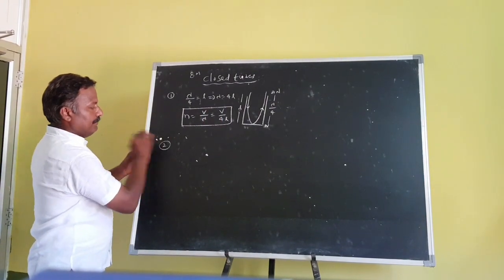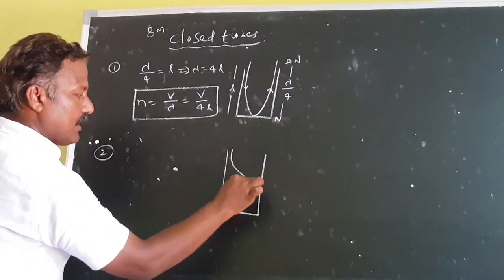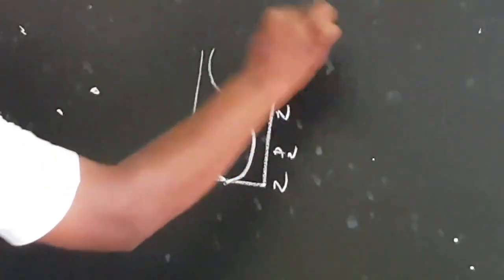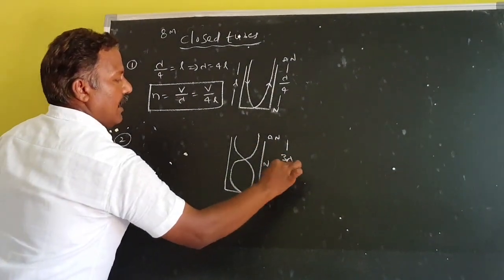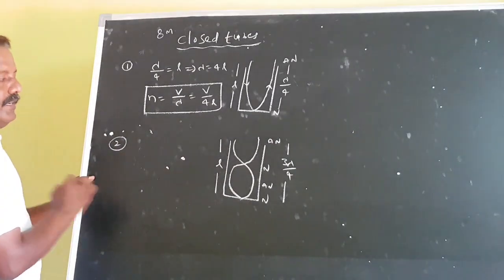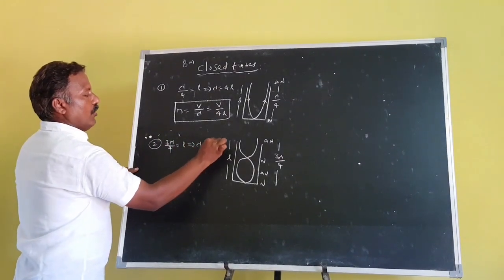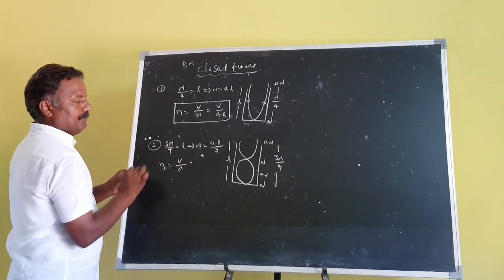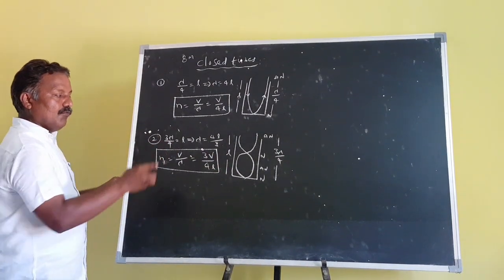The next mode of vibration: one and a half loops are formed. Two nodes and two anti-nodes are formed. The length is 3L/4, because there are 3 gaps, each of λ/4, giving 3λ/4 = L. After cross multiplication, λ = 4L/3. From V = N1·λ, N1 = V/λ. Substituting λ = 4L/3: N1 = 3V/4L. This is the 3rd harmonic frequency and the 1st overtone.